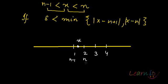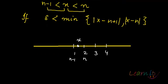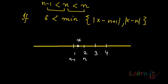This becomes my n minus 1, this becomes my n. So what is happening here? Between two natural numbers, there is a real number.